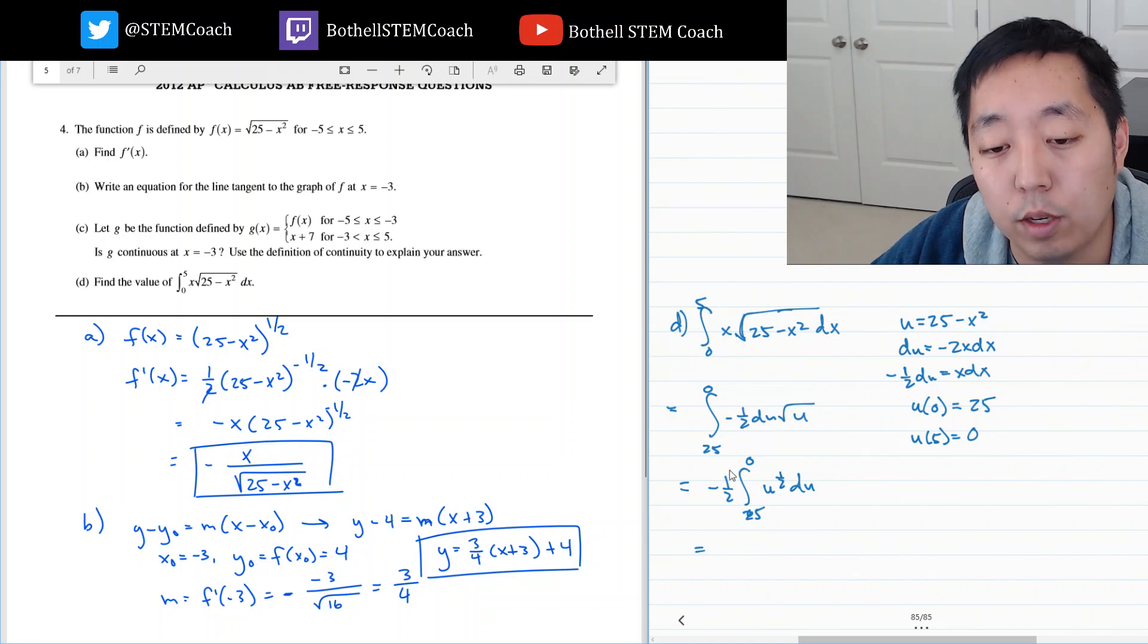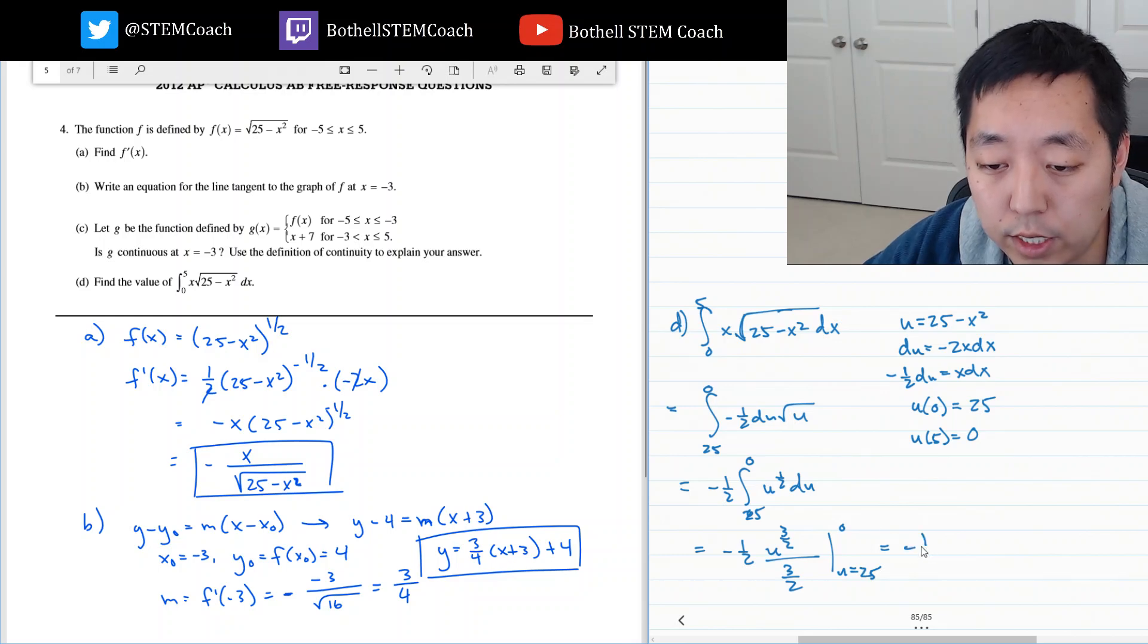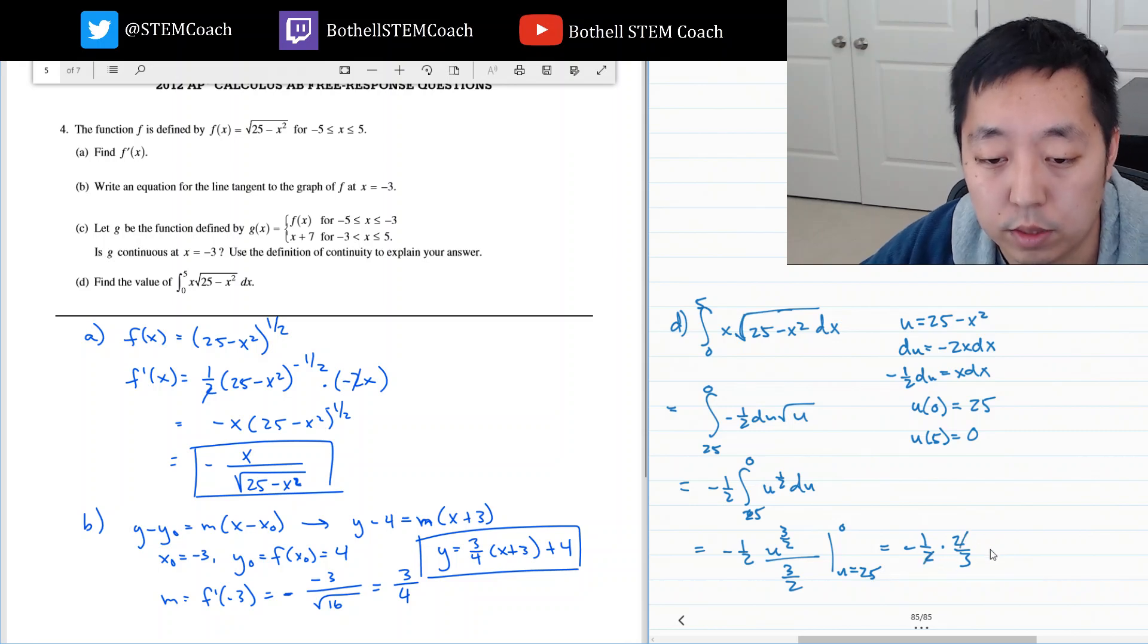Then I can, now I know, I can do power rule. Negative 1 half u, add 1, that's 3 halves, divided by that 3 halves. Evaluate it from u equals 25 to 0. So that's negative 1 half times 2 thirds. So that cancels with that. And then u to the 3 halves. So I'm going to plug in 0. 0 to the 3 halves minus 25 to the 3 halves.